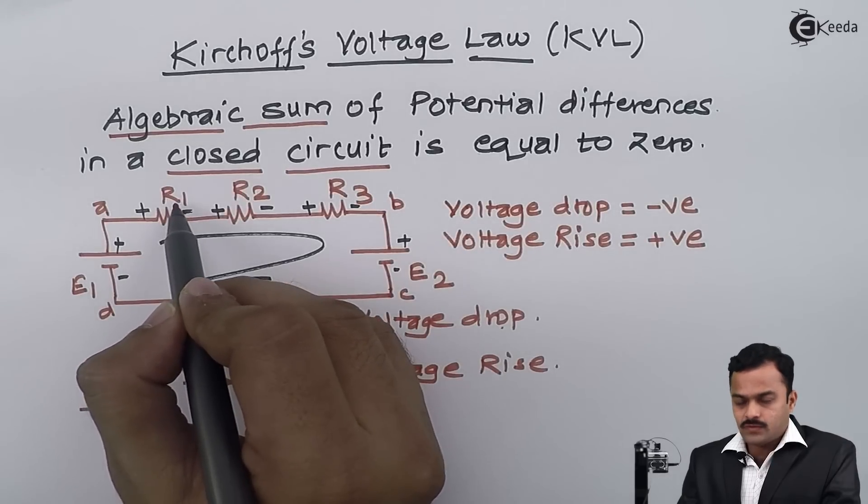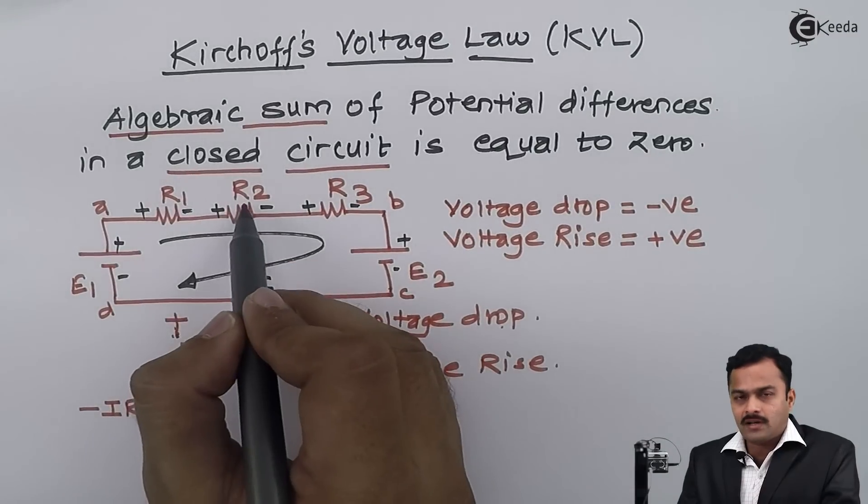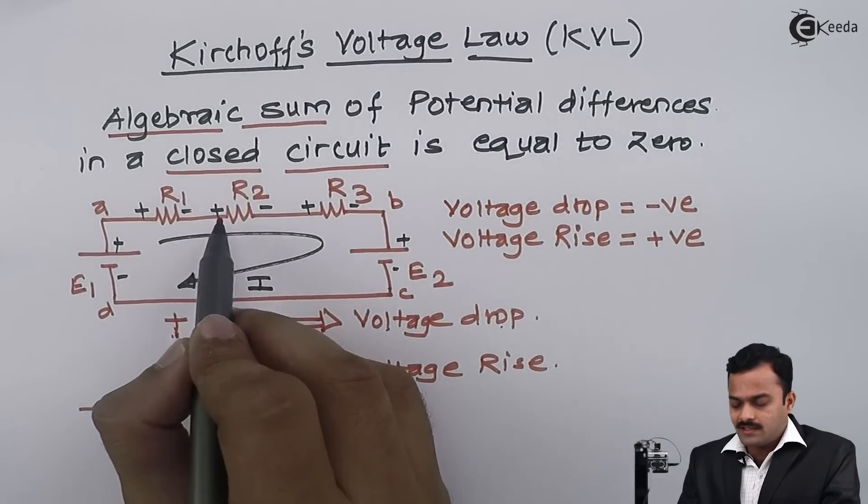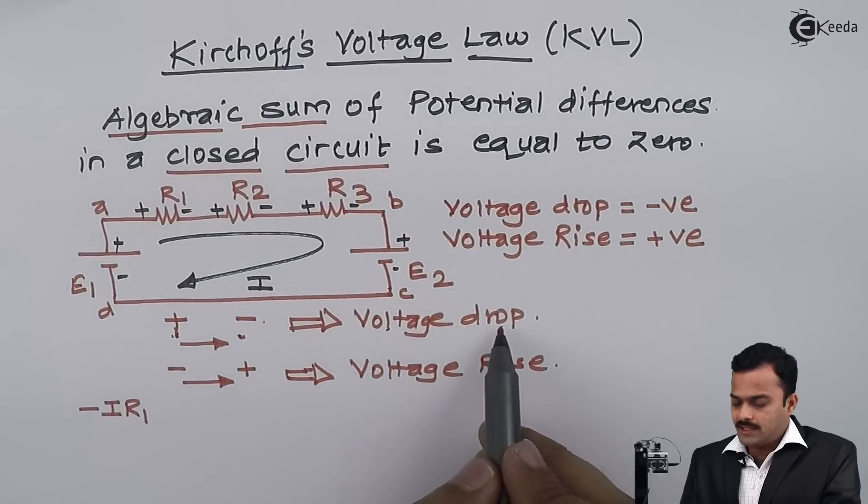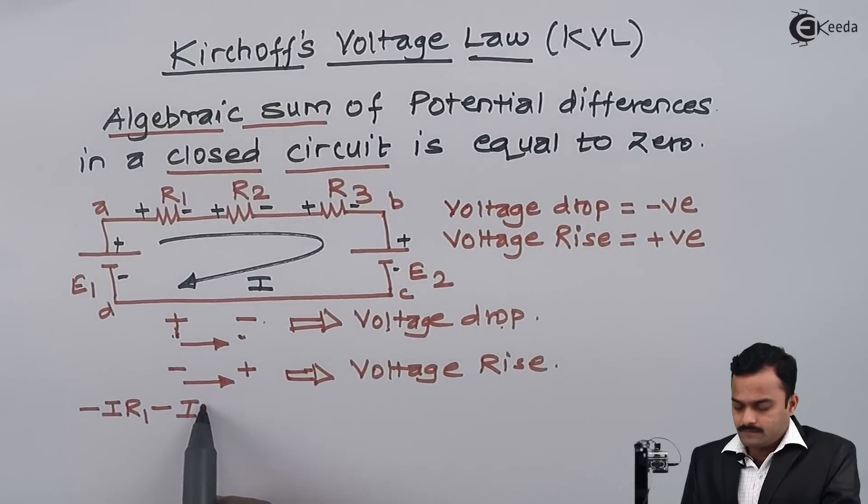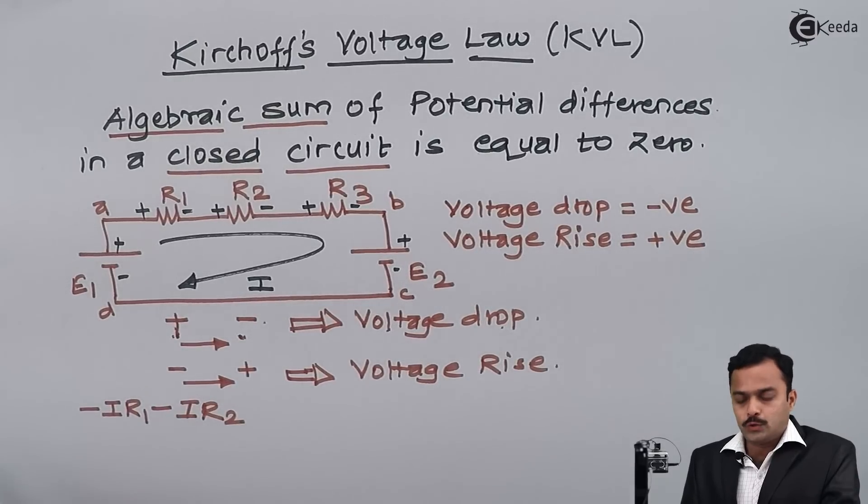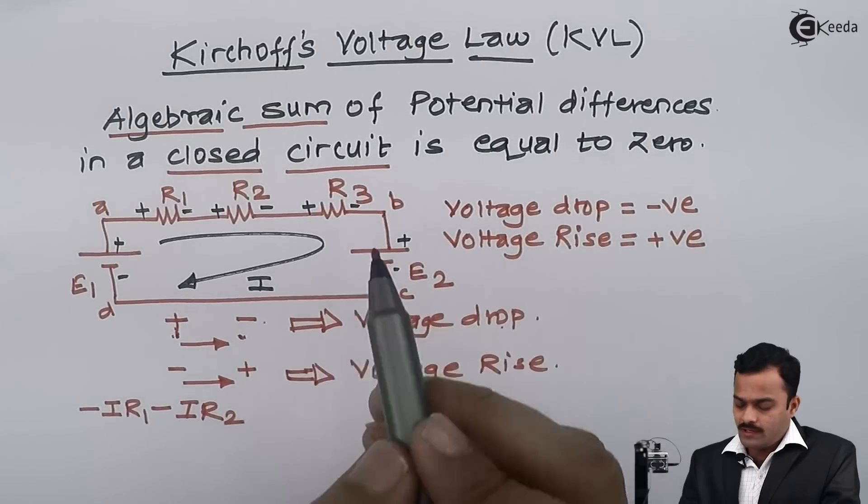Same way for R2, in this direction I am having plus to minus. Plus to minus is again a voltage drop which is negative, so minus IR2. Third, again a resistance having the same polarity plus minus, so I will get minus IR3.